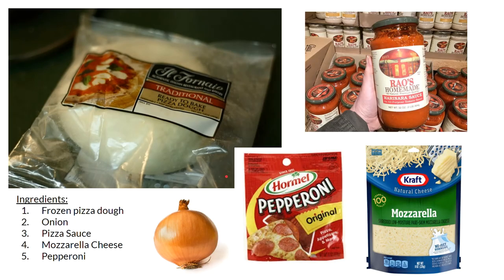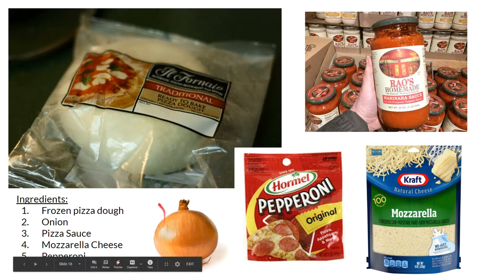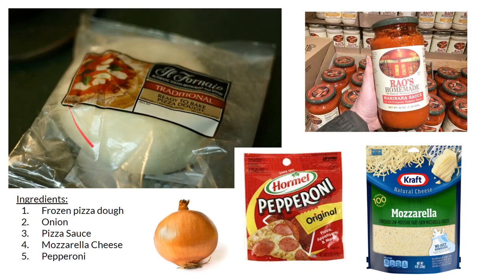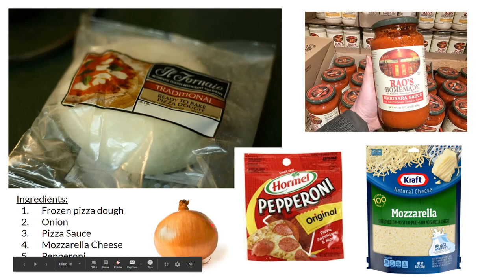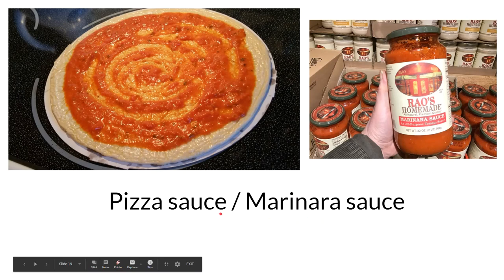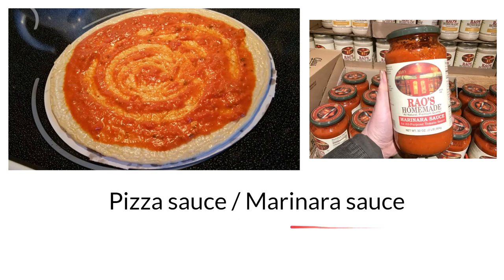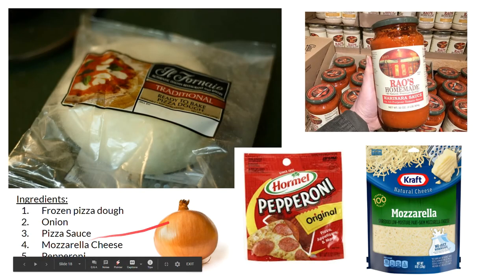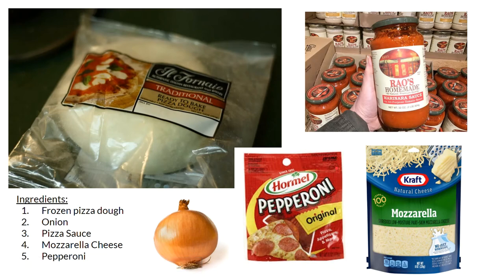Here is my list of ingredients. We need pizza dough — in America you can buy frozen pizza dough, so let's use that. We need an onion. We need pizza sauce, which you can buy in jars — it's also known as marinara sauce. We need shredded mozzarella cheese. And of course, finally, we need pepperoni for our pizza.